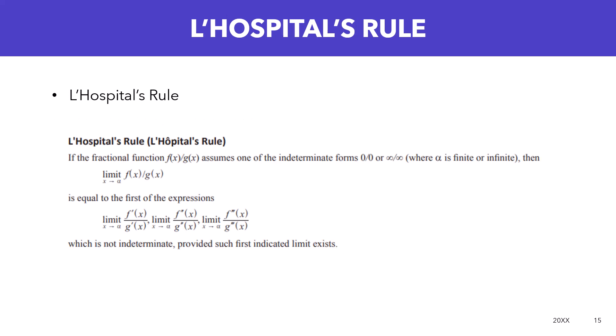Then there is another rule known as L'Hôpital's rule. If the fractional function f(x) over g(x) assumes one of the intermediate forms of 0 over 0 or infinity over infinity, where infinity is finite or infinite, then the limit as x approaches infinity of f(x) over g(x) allows you to then take the derivative of the top and bottom function to find the limit.